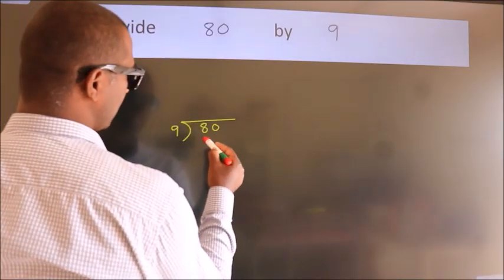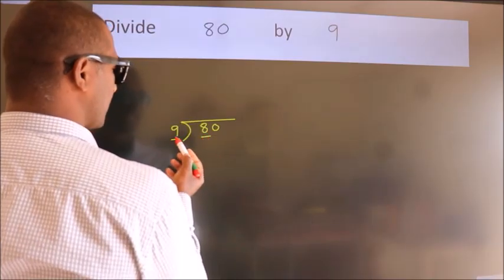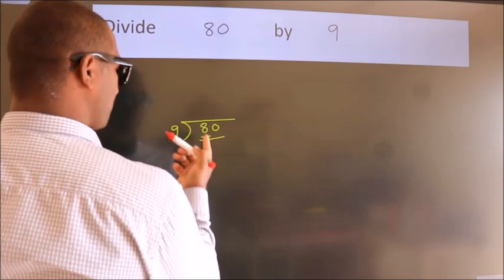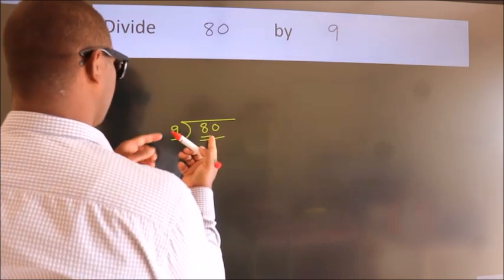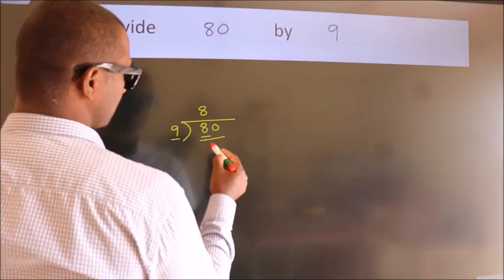here we have 8, here 9. 8 smaller than 9. So, we should take two numbers. 80. A number close to 80 in 9 table is 9 times 8, 72.